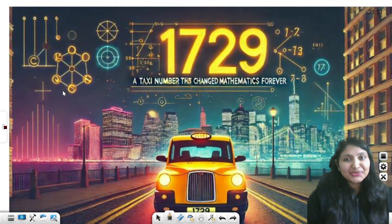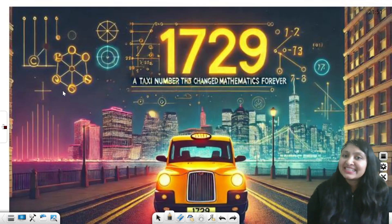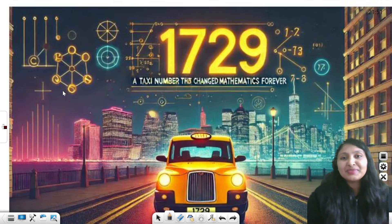One seven two nine. A simple number in fact. Is it? Behind this ordinary number lies an extraordinary story, a story that changed mathematics forever.